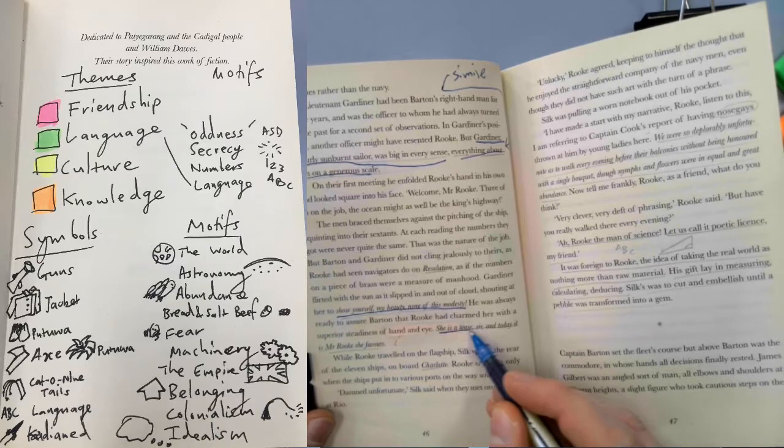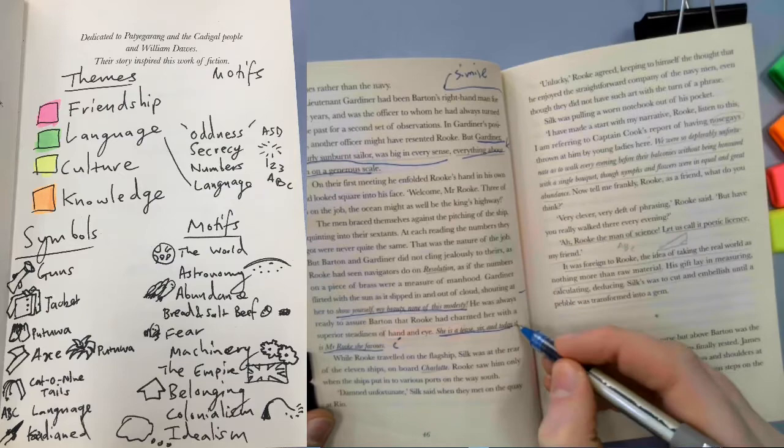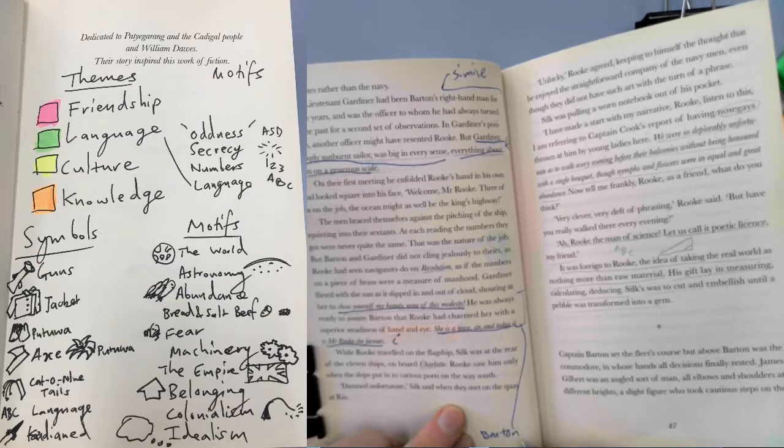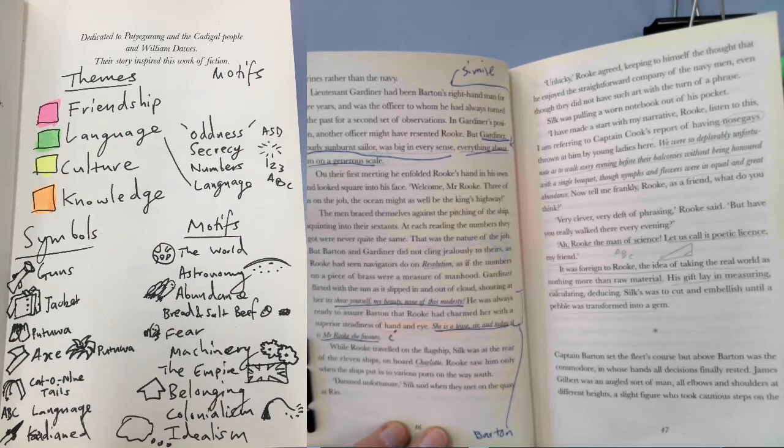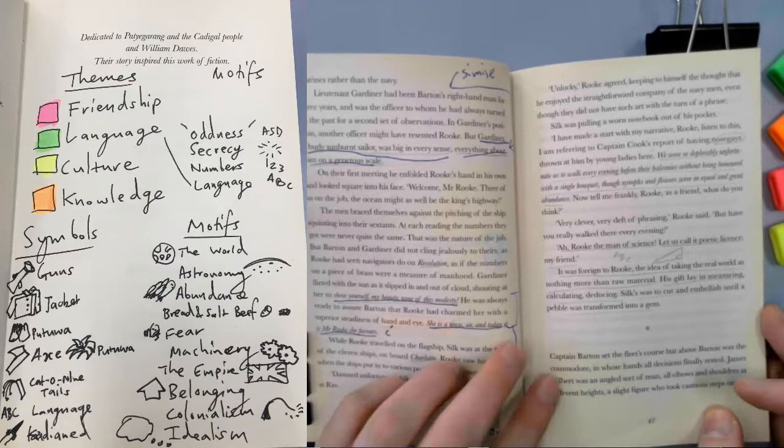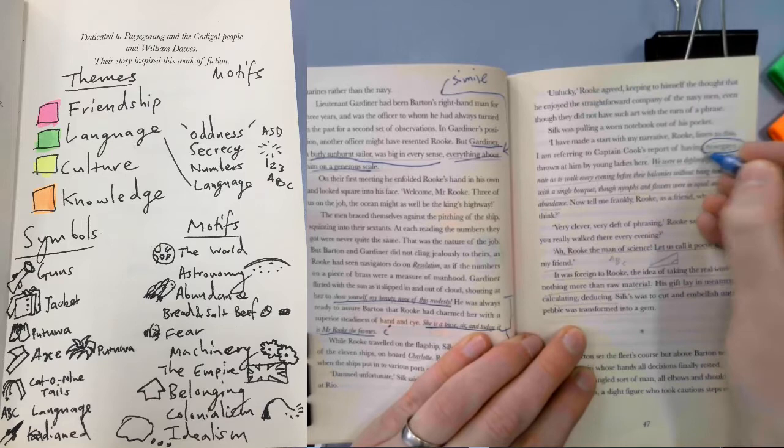Show yourself, my beauty, none of this modesty. She is a teaser and today it is Mr Rook she favours. Today's Barton, his colleague. Not a super important character, but gives you a bit of an idea of the unscientific way that his contemporaries might view things. So he thinks of the sun kind of as like a woman that can be a cruel mistress, perhaps. Whereas for Rook it is always scientific and there's nothing humorous or humane or human about it.